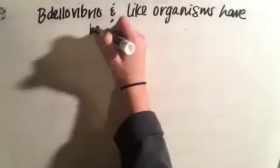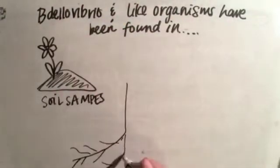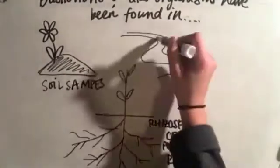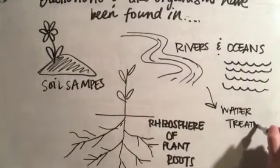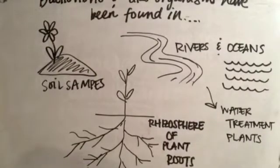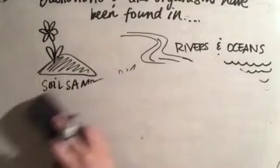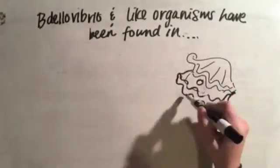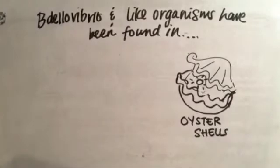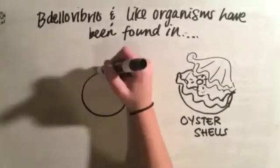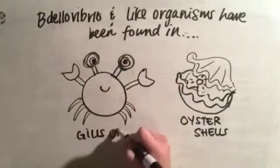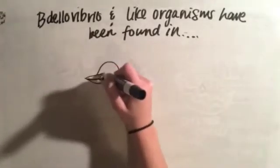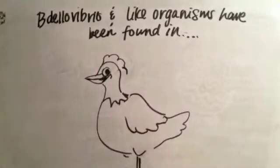Bdellovibrio and like organisms have been found in numerous environments, such as soil samples, the rhizosphere of plant roots, rivers, oceans, water treatment plants, oyster shells, the gills of crabs, and within the feces of hens and other mammals.